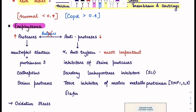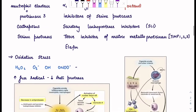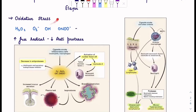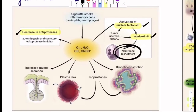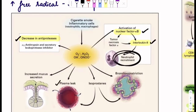What happens in emphysema? Either the proteases will increase or the anti-proteases will decrease. You have heard about alpha-1 antitrypsin deficiency — this plays a very important role and is the most important one. In emphysema, you have oxidative stress because of the imbalance. There is increase in free radicals and decrease in anti-protease. These free radicals cause decrease in anti-protease, activation of nuclear factor kappa-beta, which in turn causes activation of interleukin-8 and neutrophil recruitment. These free radicals also cause plasma leak, increased mucus secretion, and bronchoconstriction.